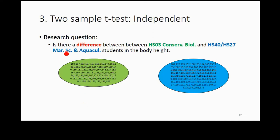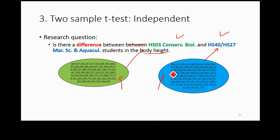For example, one research question is: is there a difference between students in two programs in terms of their body height? Assume these are the populations — all students from each program. The population sizes are different, but that doesn't matter at this point. Each number represents one student. We measure body height as the response variable and want to compare if there are any differences between students from different programs.